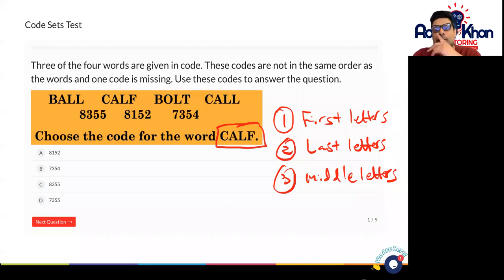So first of all let's see what's in common. We can see here that ball starts with b and bolt starts with b. Call starts with c and calf starts with c as well. So that means that eight could be b or it could be c. It's very difficult to determine just yet.